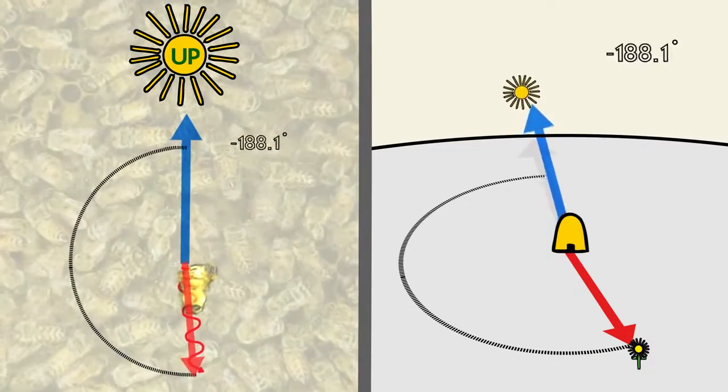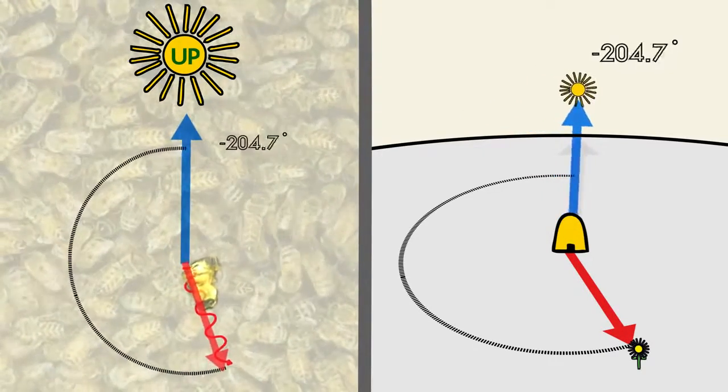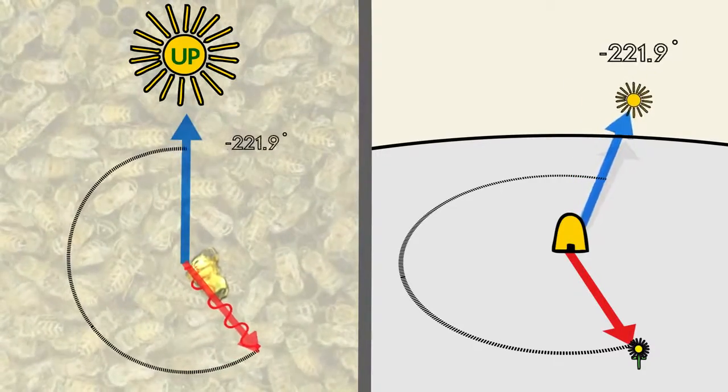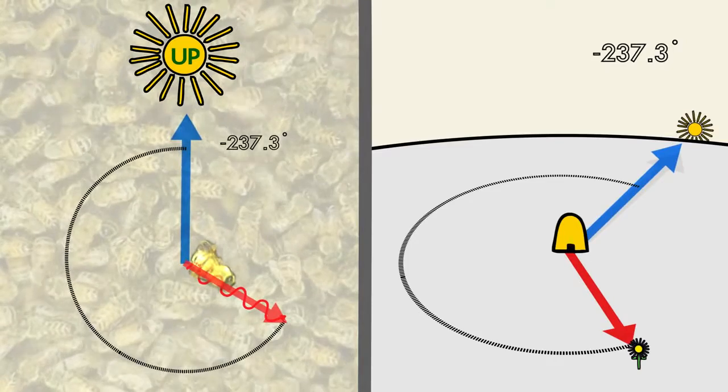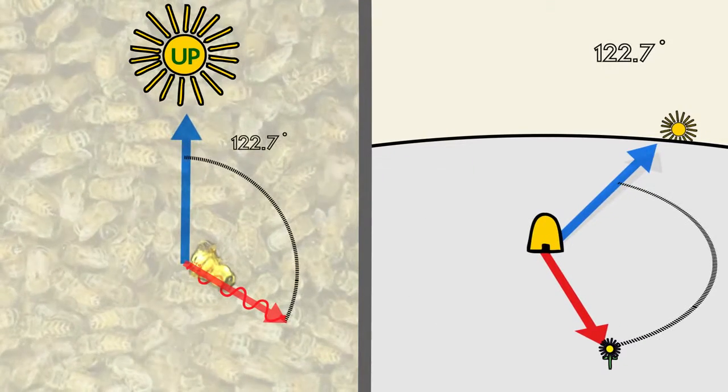As the day goes by, a bee will even use its internal clock to adjust for the movement of the sun in the sky. This lets fellow workers always know the correct direction to travel in order to find food.